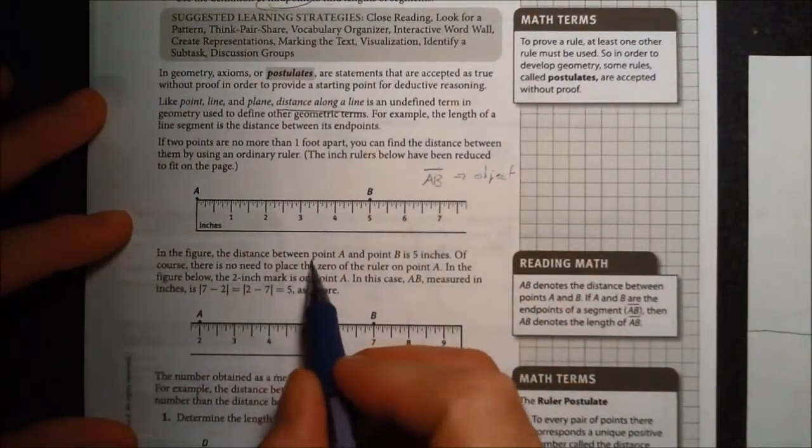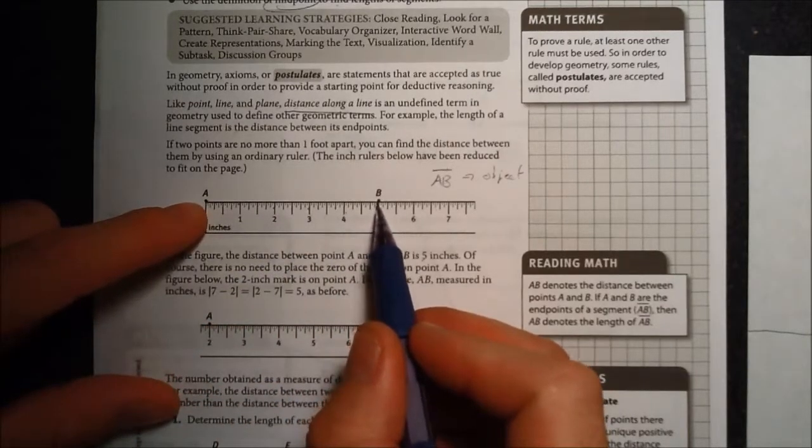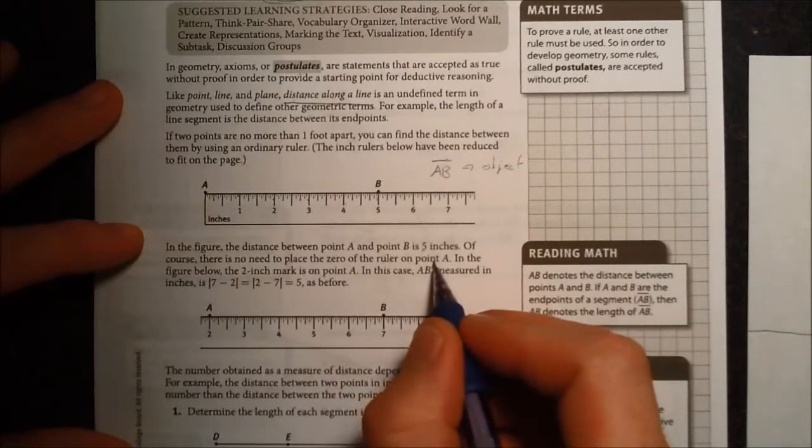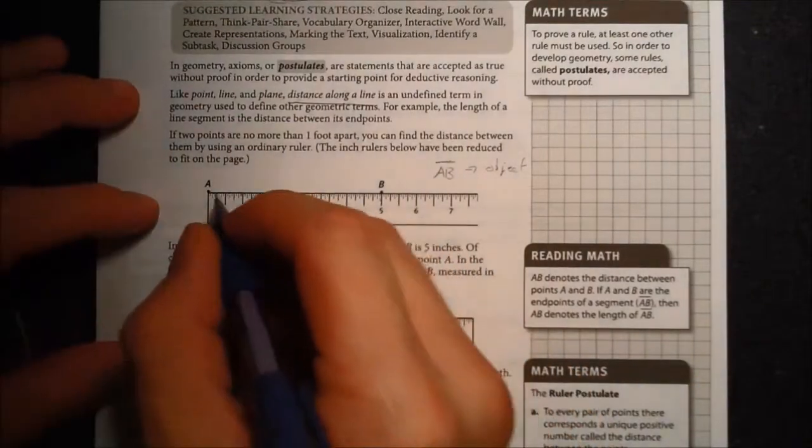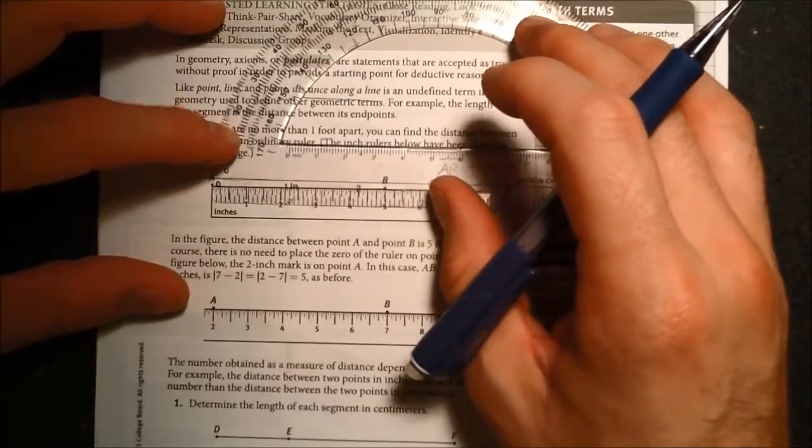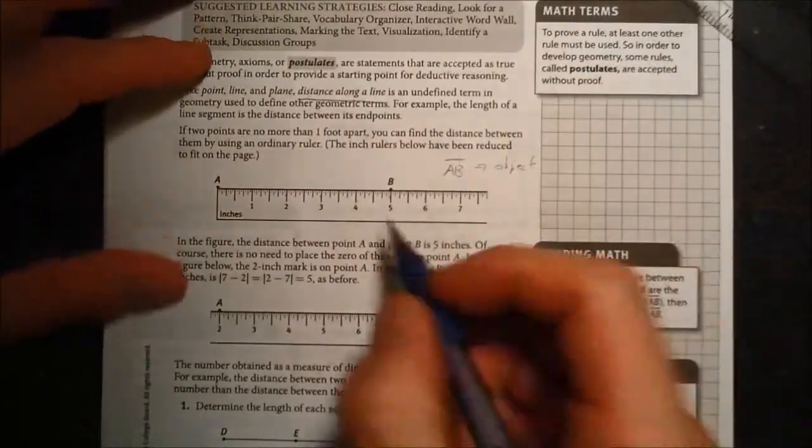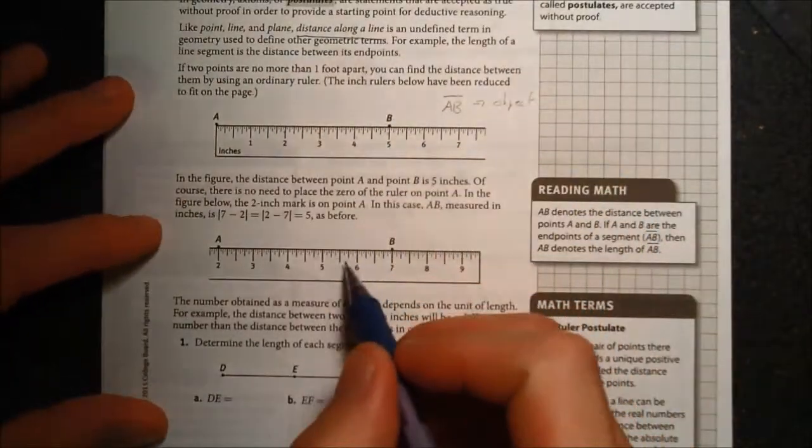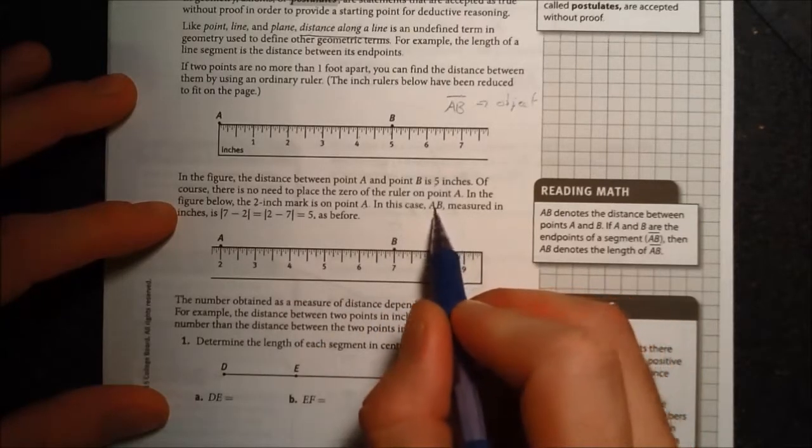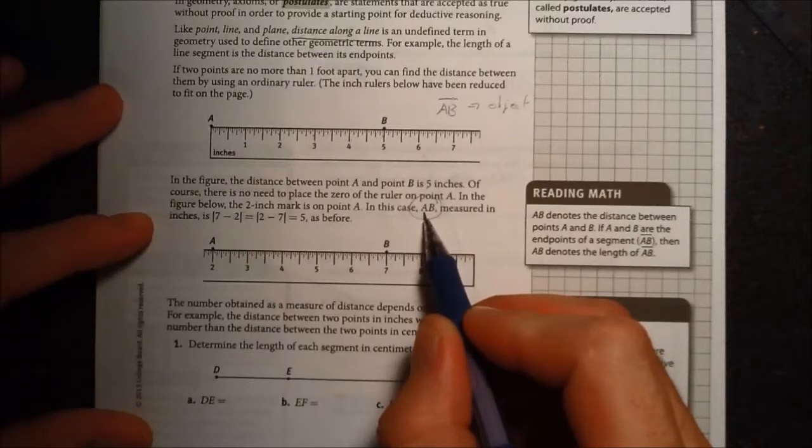It says in the figure, the distance between point A and point B is five inches. Obviously, we have one, then two, then three, then four, then five inches. So we can just say that the length of this segment AB is five inches. It says, of course, there is no need to place the zero of the ruler at point A. So it's saying this distance is not going to change. These points aren't going to move magically. We could take a ruler like this and place one endpoint exactly at zero and then just measure it. But we can also move this ruler around and that length will not change. It's still going to be, in this case, in this diagram, five inches. And so that's what it says down here. It says in the figure below, the two inch mark is now on point A.